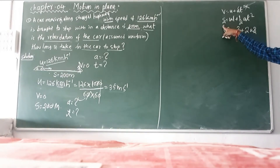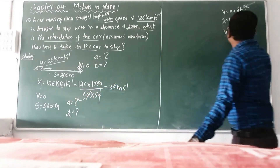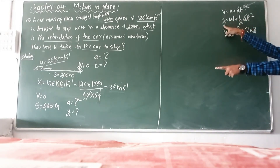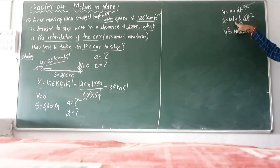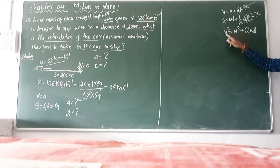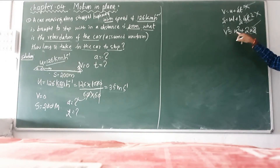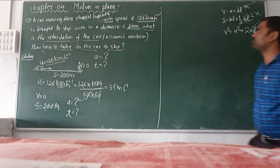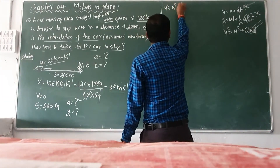Second formula S equals UT plus half AT square — displacement is given, initial velocity is given, but time is not given and acceleration is unknown. Two unknowns again, so this formula is not possible. Third formula: V square equals U square plus 2AS — final velocity is given, initial velocity is given, displacement is given, and only acceleration is unknown. Use this formula.